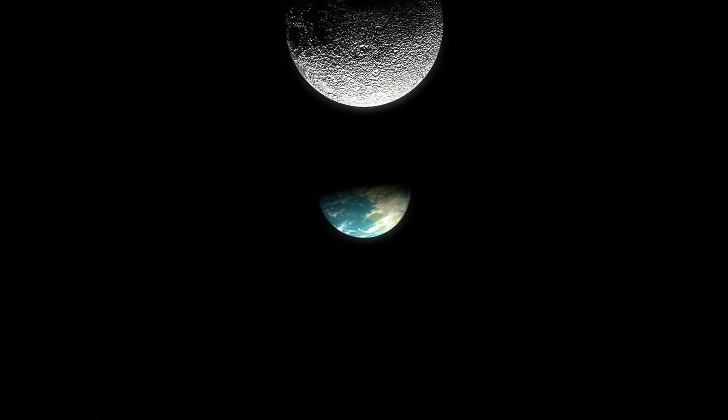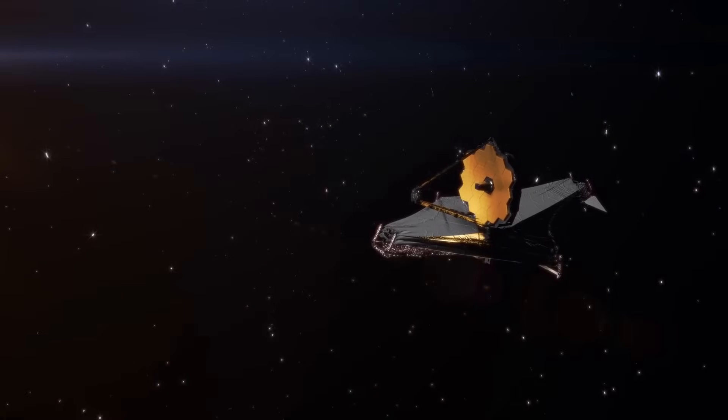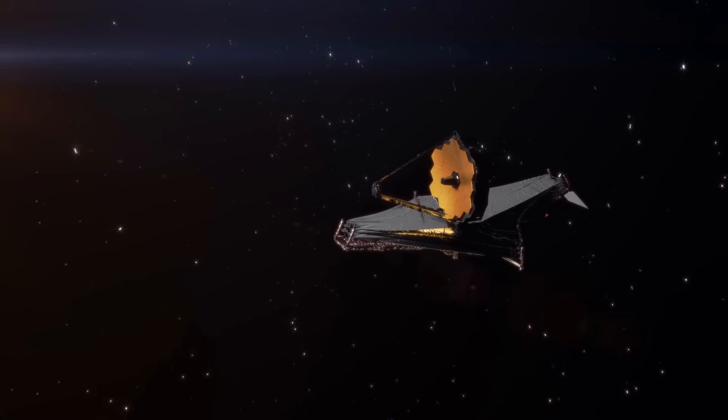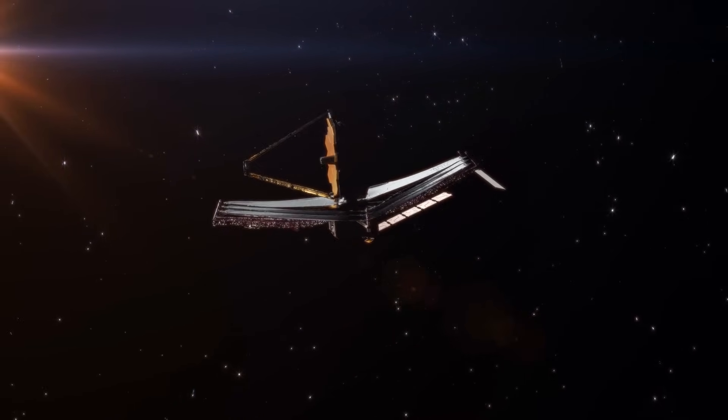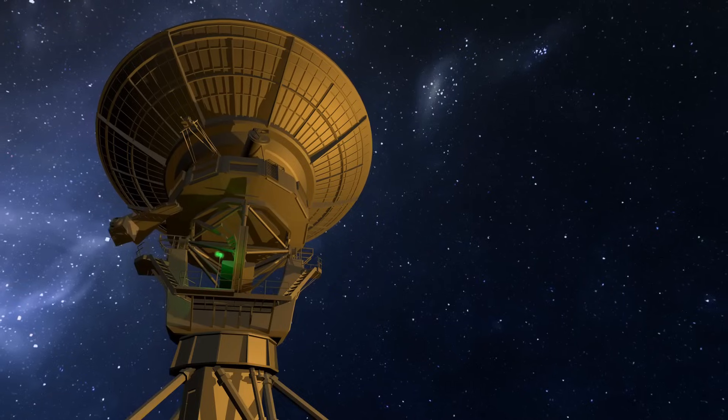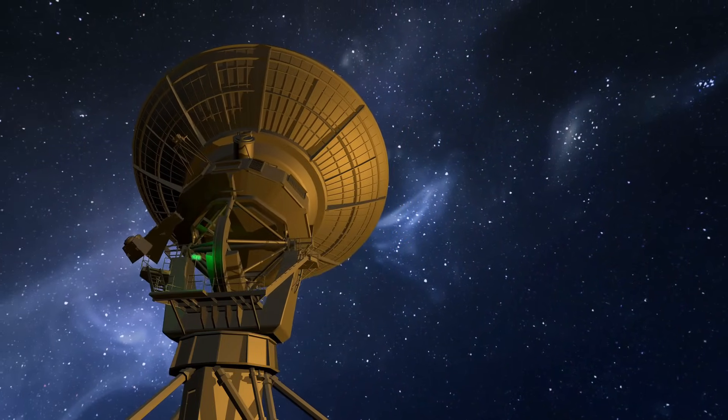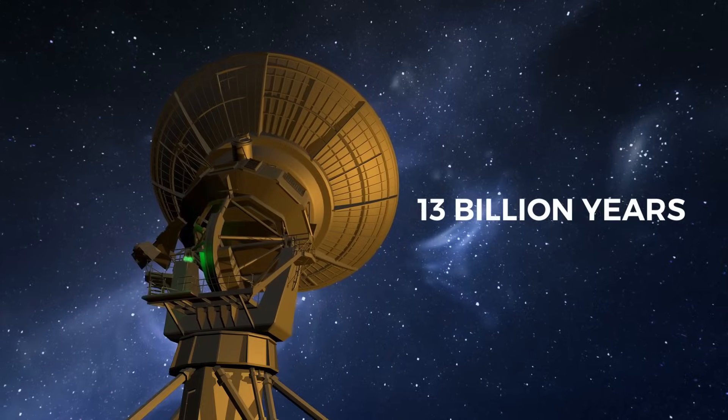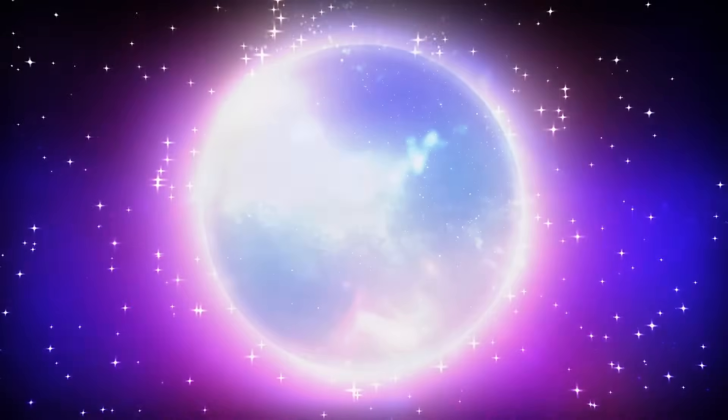Because Webb is in space, far beyond the effects of Earth's atmosphere, it has a clear view of the universe. With its advanced technology and strategic location, Webb can look back in time to the beginning of the universe and learn about how the first stars and galaxies formed and changed over time. The powerful devices on the telescope can pick up faint signals that have been traveling through space for over 13 billion years. This lets us see things that happened right after the Big Bang.